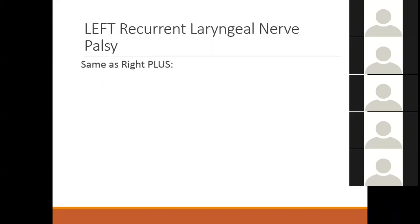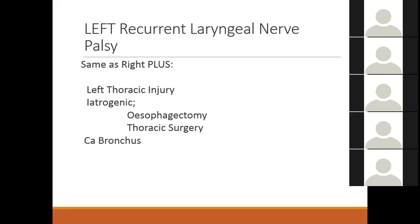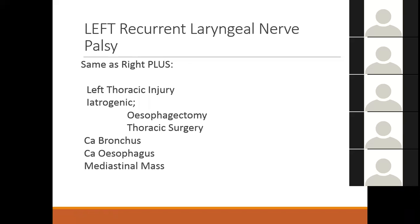Left recurrent laryngeal nerve palsy has the same causes as the right side plus left thoracic injury — iatrogenic such as esophagectomy, thoracic surgery, or bypass surgery — as well as carcinoma of the bronchus and carcinoma of the esophagus. Causes of left recurrent laryngeal nerve palsy therefore include all neck causes plus left thoracic causes including bypass, carcinoma of the bronchus, and carcinoma of the esophagus.